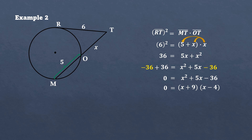Equating each factor to zero: X plus 9 equals 0 gives X equals negative 9, and X minus 4 equals 0 gives X equals positive 4. Since we are finding the length of an external secant segment, we choose the positive value, X equals 4, because there is no negative length. Therefore, the length of the external secant segment is 4.